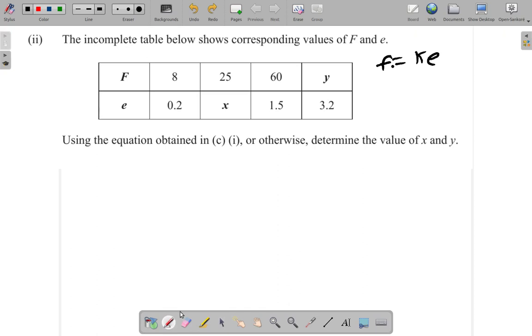Let's see what happens here. We have f equals ke. In this case, using the 8 and 0.2, since f is equal to k times e, 8 is equal to the constant k times 0.2. This will enable you to get the constant.